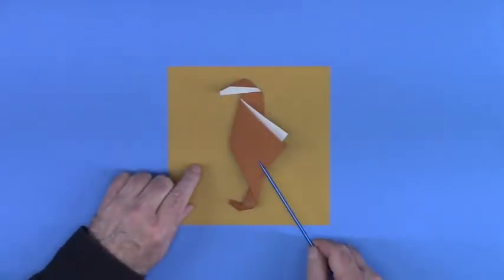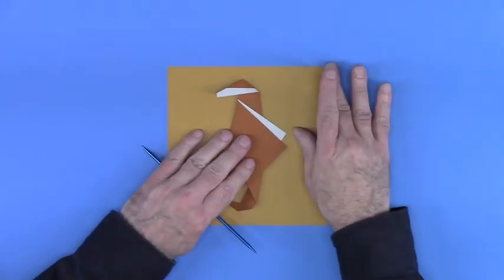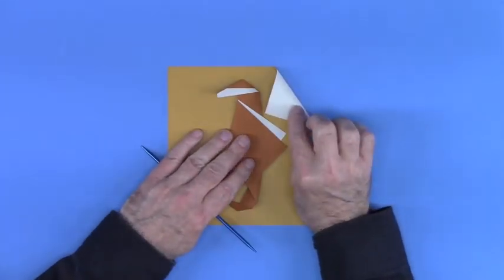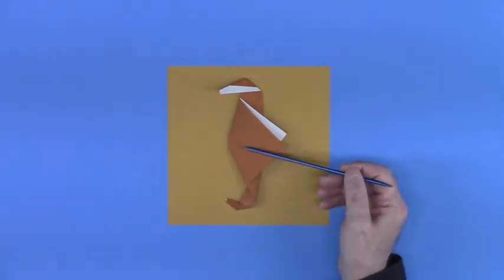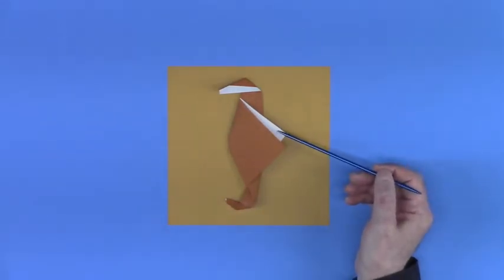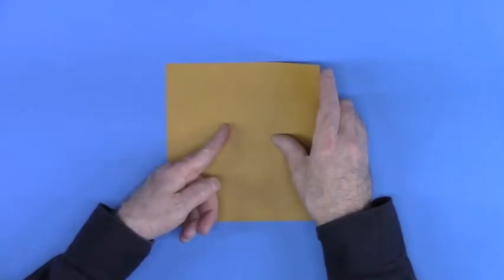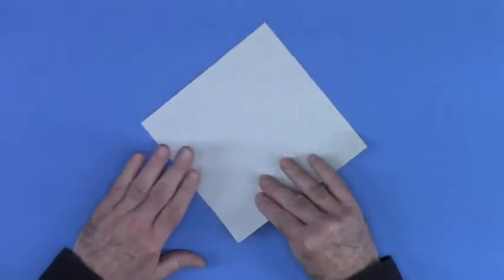This simple seahorse is folded from a single square and it's best to use a paper that's colored differently on each side. Notice that there's a major color, brown, and a minor color, white. Decide which will be the major color and put it facing down.